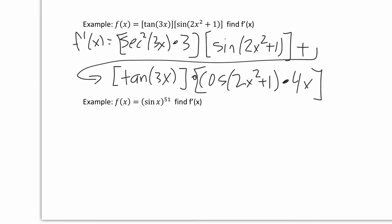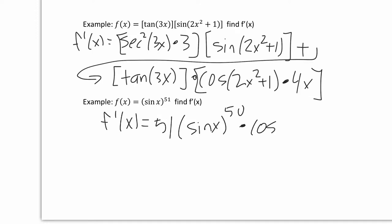Now let's look at f of x equals sine x to the power of 51. The most outside function is the power of 51 — a power rule — so we bring down that power: 51 times sine x to the 50, times the derivative of the inside, cosine x. And we're done.